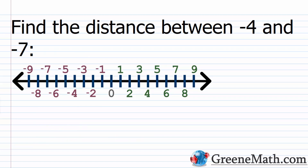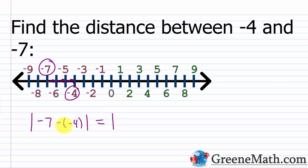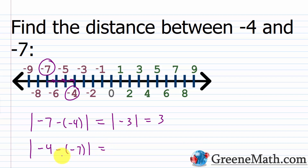Let's look at one more: find the distance between negative 4 and negative 7. You can eyeball that it's 3 units — 1, 2, 3. Using the formula: the absolute value of negative 7 minus negative 4 equals the absolute value of negative 7 plus 4, which is the absolute value of negative 3, which is 3. Or, changing the order: the absolute value of negative 4 minus negative 7 equals the absolute value of negative 4 plus 7, which is the absolute value of positive 3, which is 3. Either way, because of the absolute value operation, the order doesn't matter and you end up with 3 as the distance between negative 4 and negative 7 on the number line.